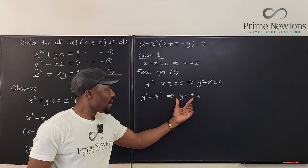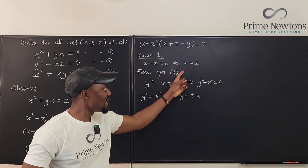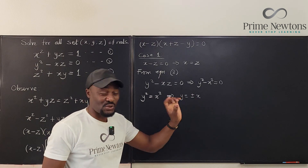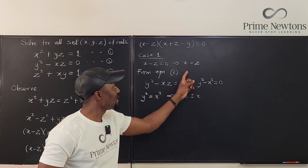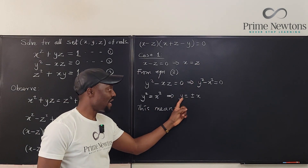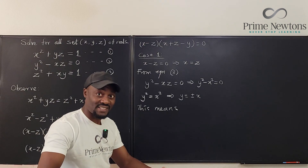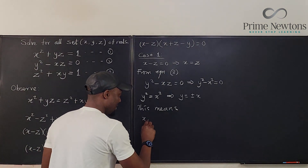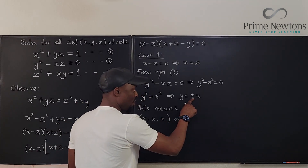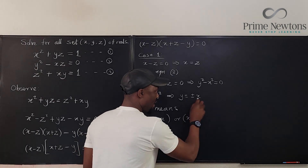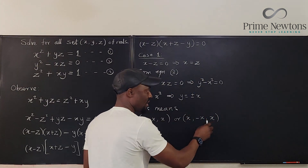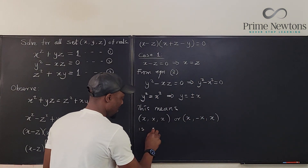So when x equals z, we have y equals x or y equals minus x. Since x and z are the same, if y equals x, then x, x, x is a potential solution. If y equals negative x, then the triple is x, negative x, x — these are both candidates we still need to test.